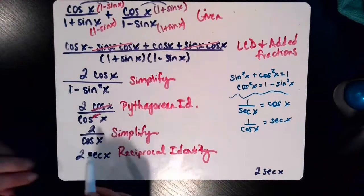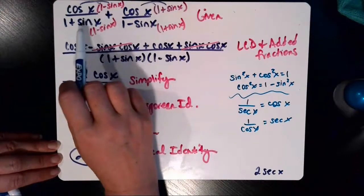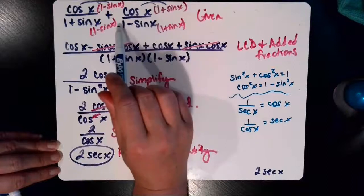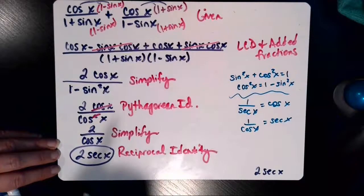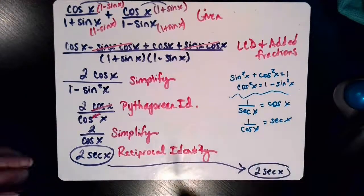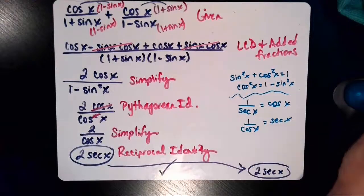And now we have shown that what we started with, cosine of x over 1 plus sine of x plus cosine of x over the quantity 1 minus sine of x, that that now is, in fact, equal to what we were looking for, which was the 2 secant x. And this trig identity has been verified.